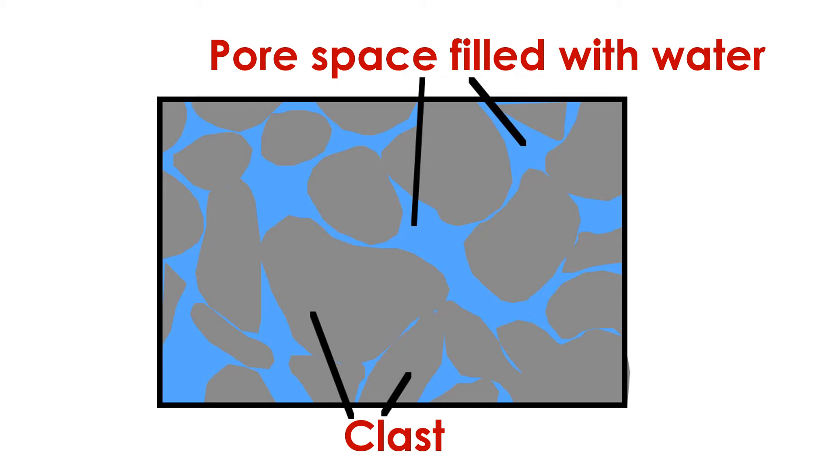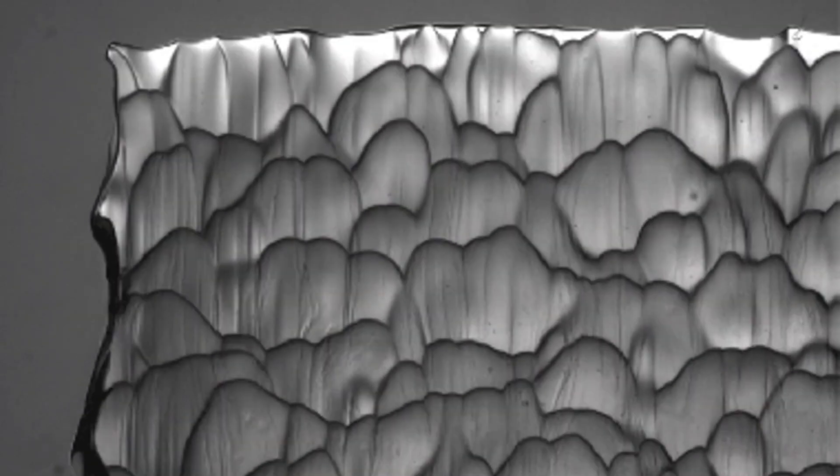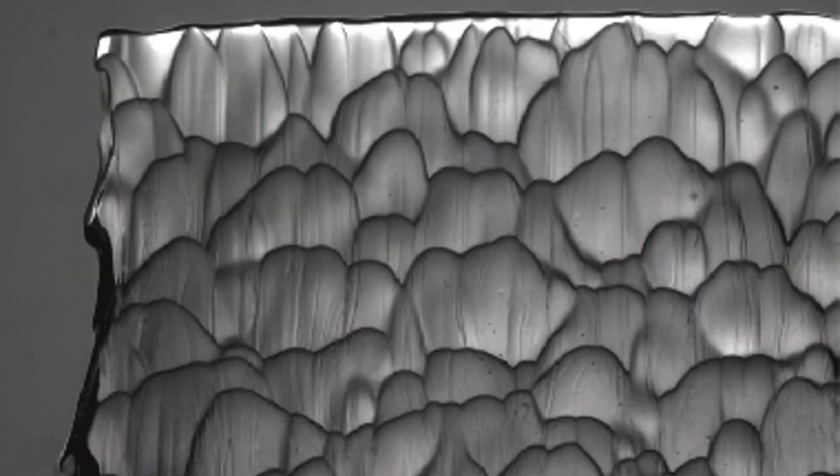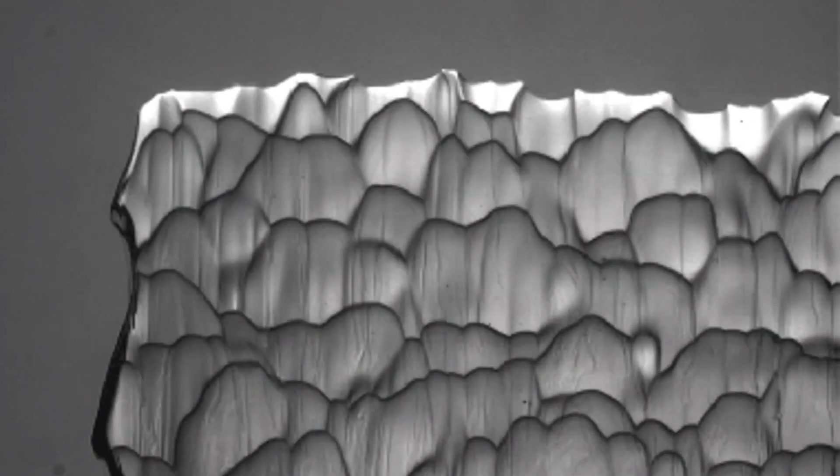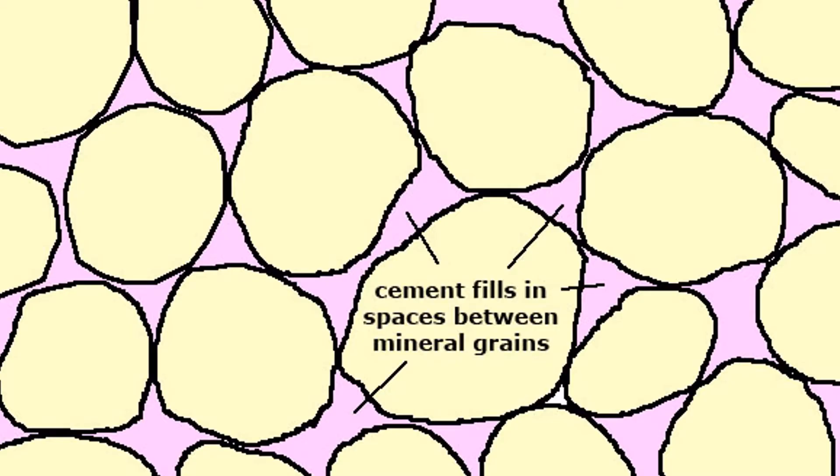In some cases, the formation of cement involves the dissolution of existing grains, releasing ions to the water, which can re-precipitate as cement. The reactions take place at low temperatures and are typically very slow. In the end, the pore spaces are largely, if not entirely, filled by cement.